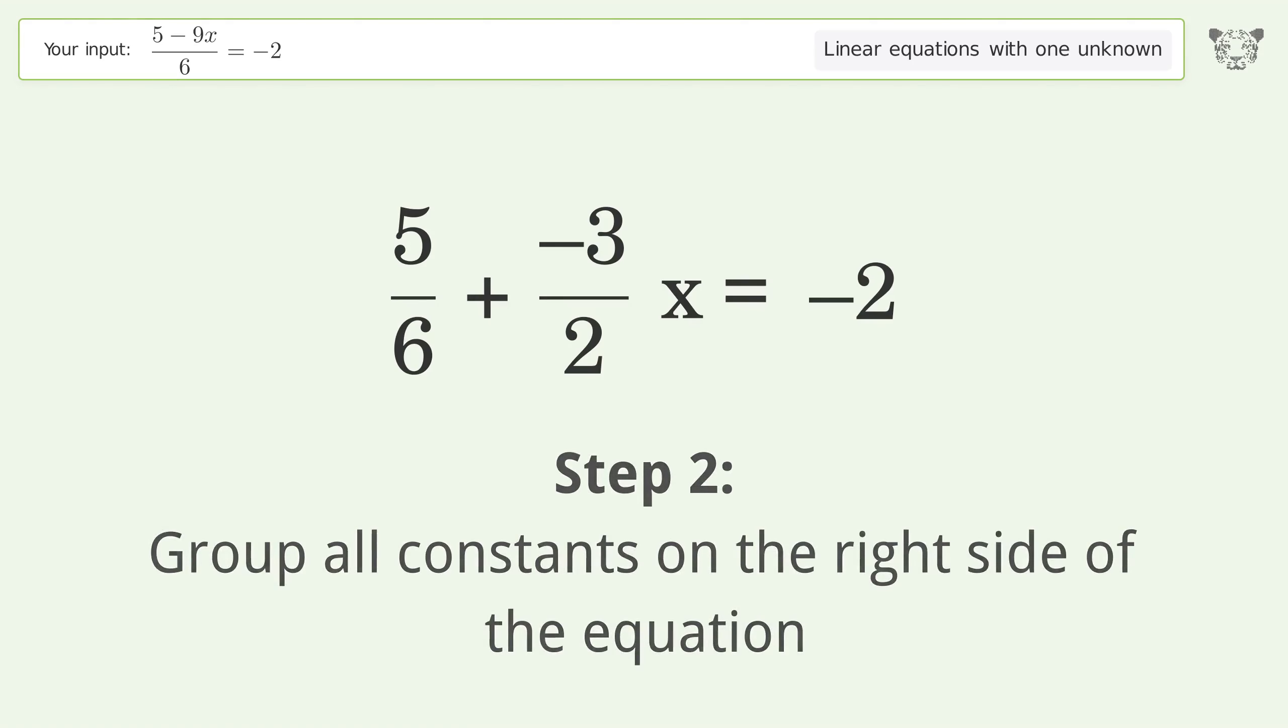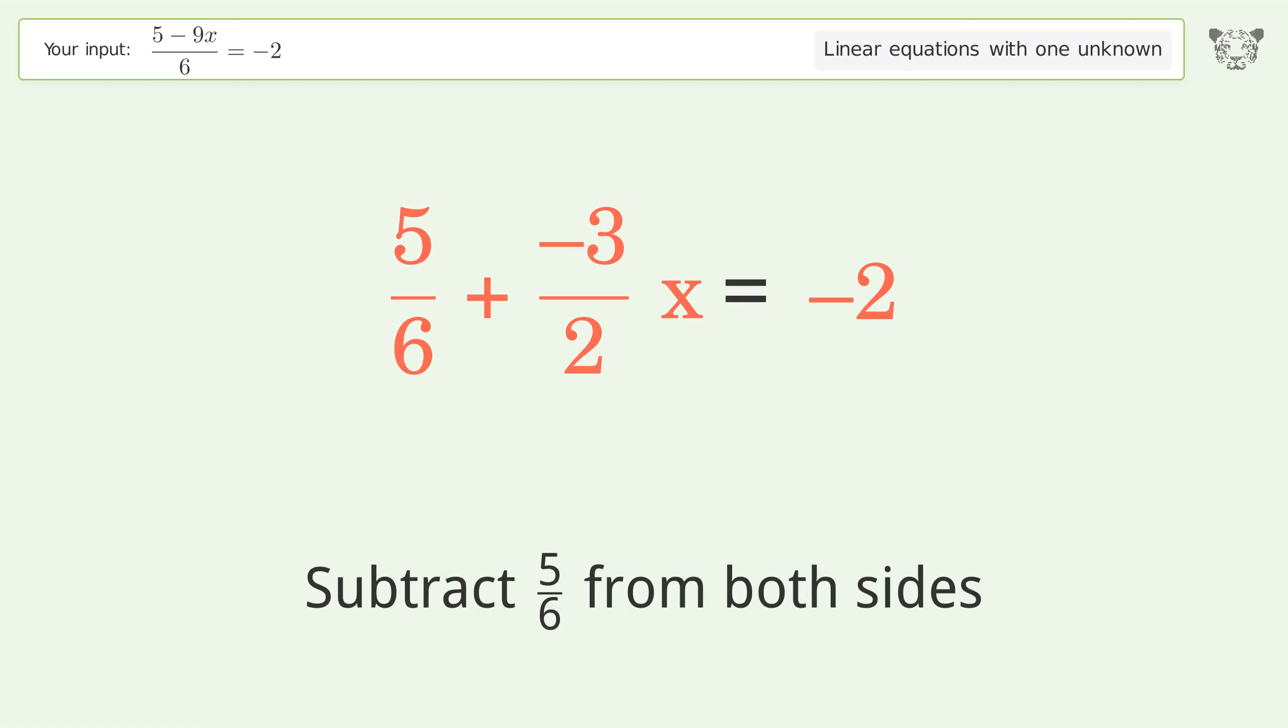Simplify the fraction. Group all constants on the right side of the equation. Subtract 5 over 6 from both sides.